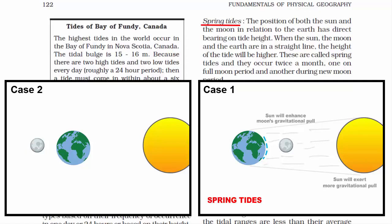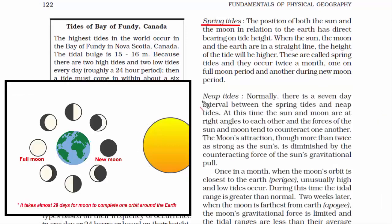In case two, where the moon is on the other side of the earth, both sides of the earth witness gravitational pull, creating high tides on both sides. Since the moon is smaller than the earth, the sun's rays have little effect on it and the moon is clearly visible in its full form — this is the full moon period, or Purnima. The conclusion: spring tides occur twice a month — once on the full moon period during Purnima and once during the new moon period during Amavasya.